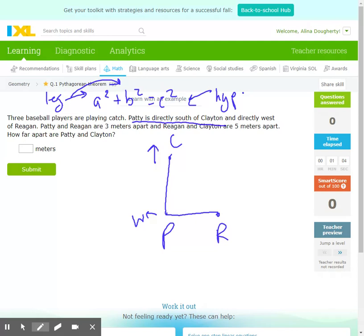Regan and Clayton are five meters apart. Patty and Regan are three meters apart. So because this is south and west, this is my right angle, which means the five is the hypotenuse. So if I come in here, I put in A and B for my legs, that means the five is the C. So A squared plus 3 squared equals 5 squared. A squared plus 9 equals 25.